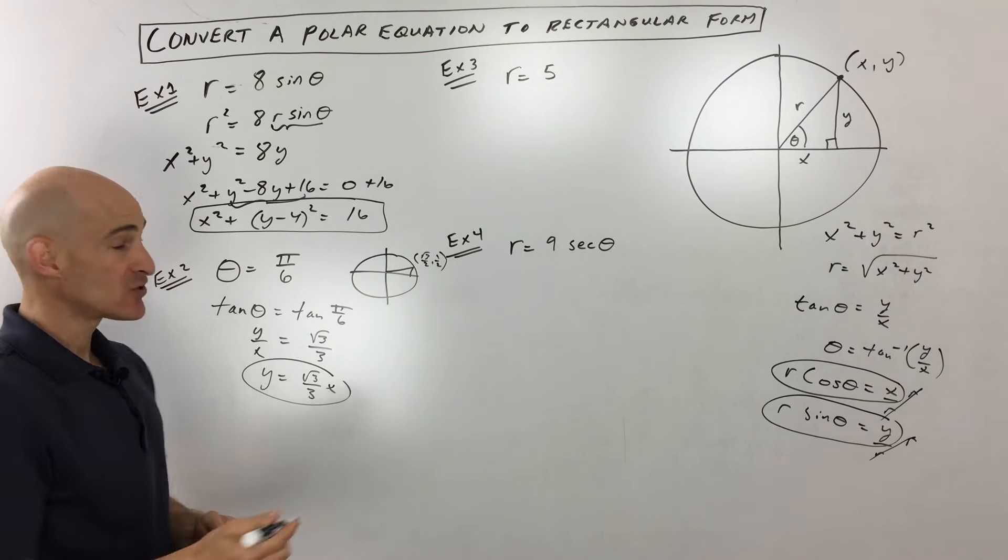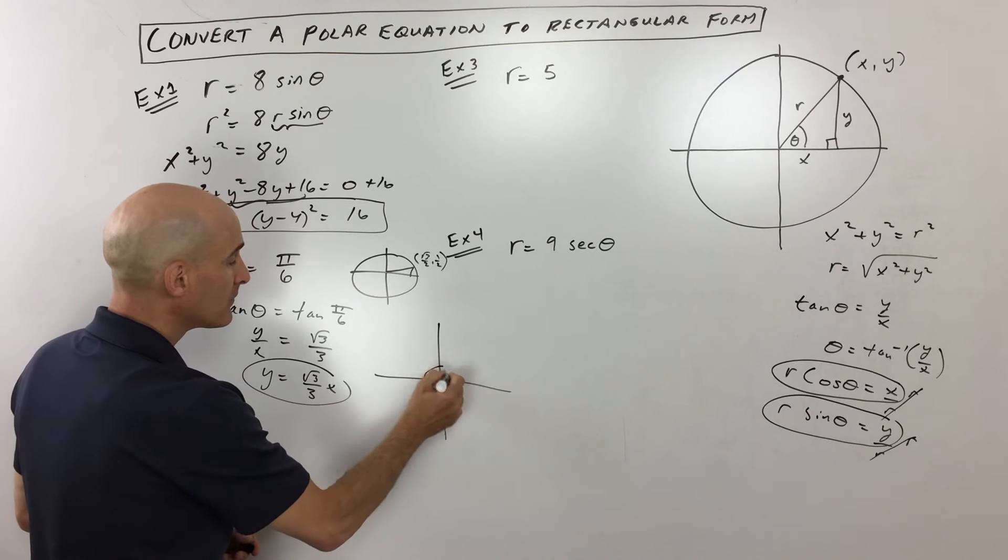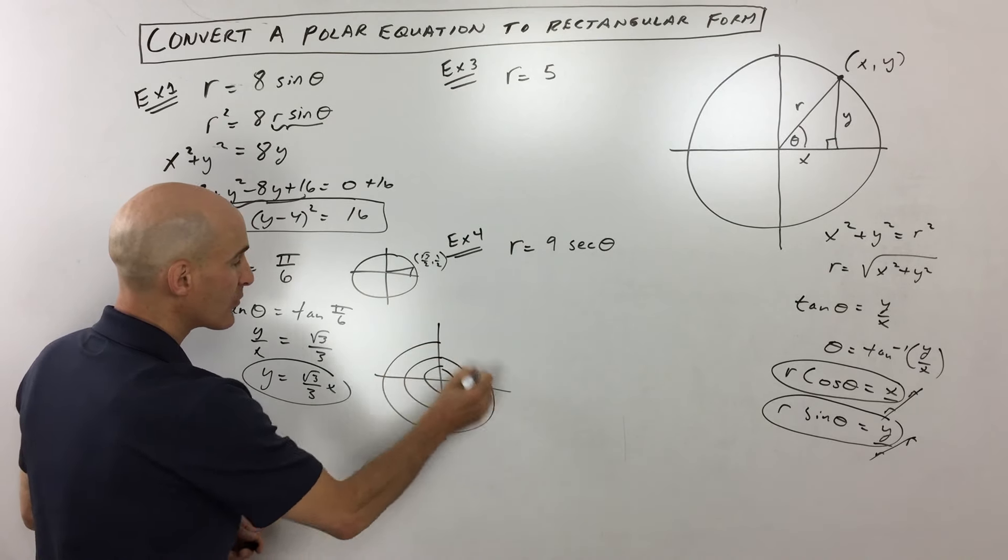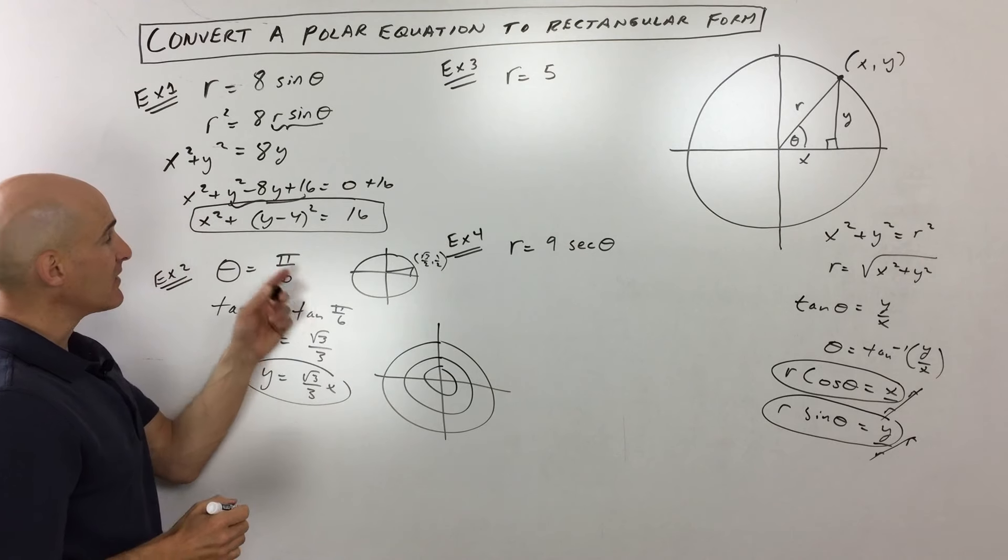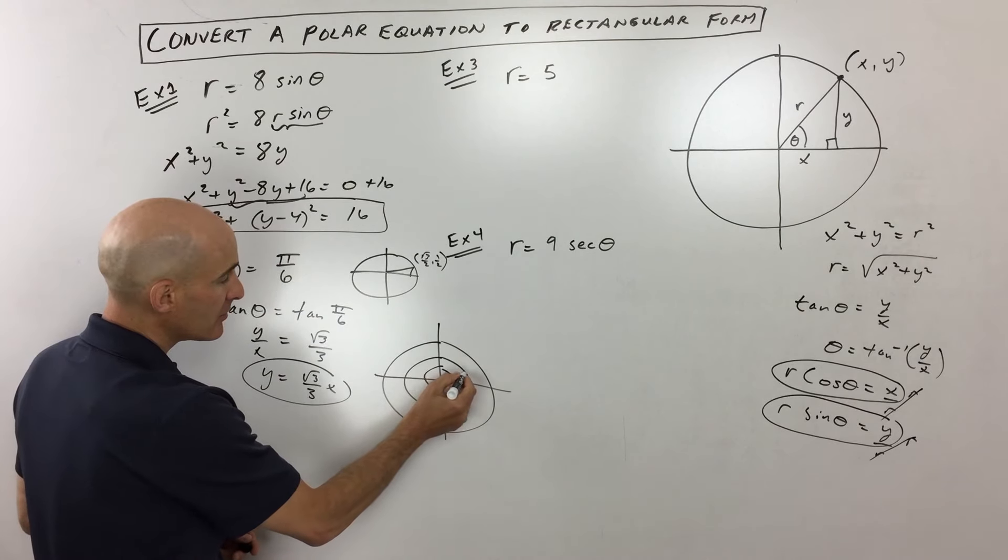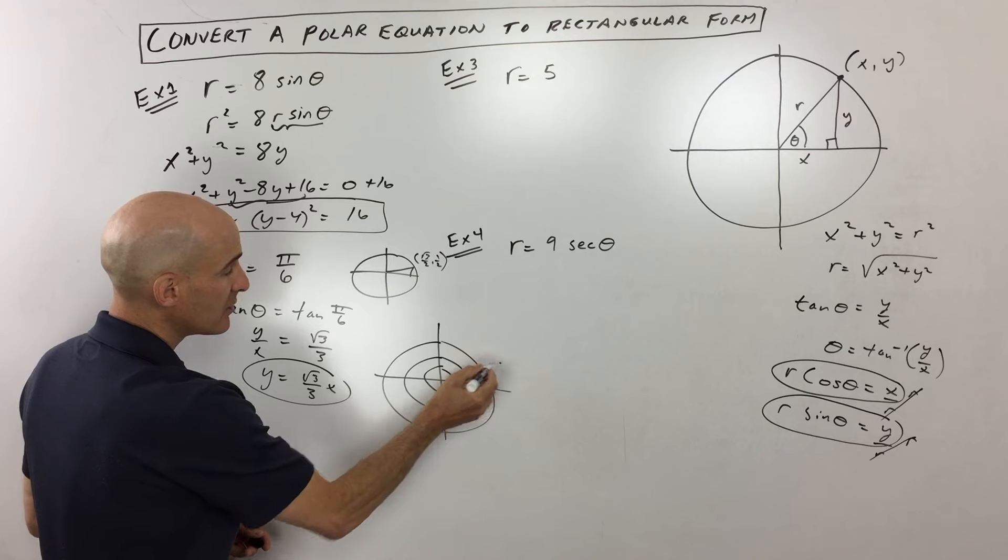Now this should make sense to us because if we think about it in polar form, this is our polar graph paper here. You can see that the angle pi over six is going to be here, here, here, here, and so on, depending on what the radius is.